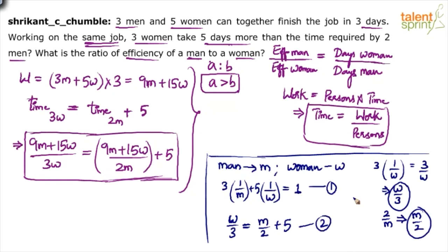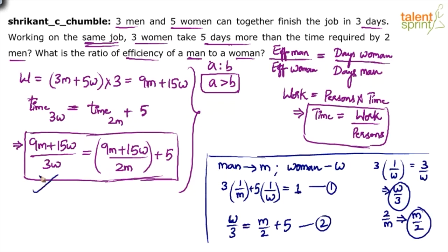To summarize: Equation 1 is a work equation — 3/M + 5/W = 1. Equation 2 is a days equation — W/3 = M/2 + 5. Both use the same variables M and W. Solve these two equations for the answer. Preferably, if options are given, use the substitution method as it is much faster.